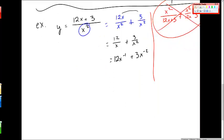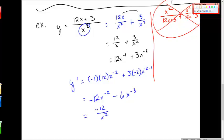And then I take the derivative the same way I have been. Y prime is equal to negative 1 times 12x to the negative 1 minus 1, which is minus 2, plus 3 times negative 2x to the minus 2 minus 1. I'll get negative 12x to the minus 2 minus 6x to the minus 3. Or you might see this written as negative 12 over x squared minus 6 over x cubed.